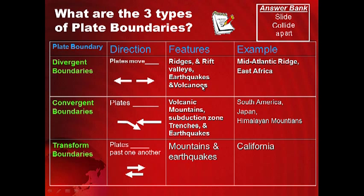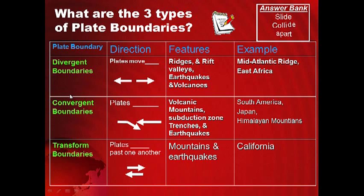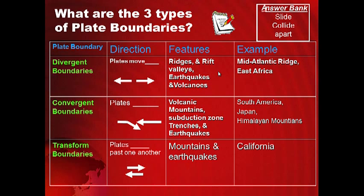For your notes — last one for today. The question: what are the three types of plate boundary? This table is very important — it summarizes a lot of important data we just covered. Draw this table in the answer section and fill it out. It has examples, features, and plate directions for each boundary name. Use the answer bank again to help you out. Write this whole table down in your answer section. Go ahead and pause this while you write.